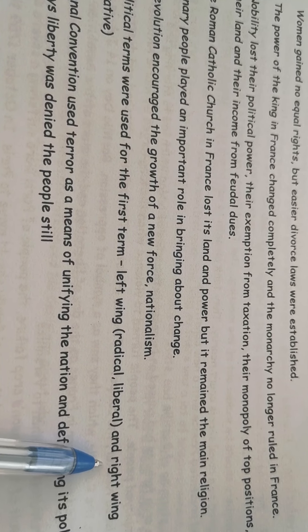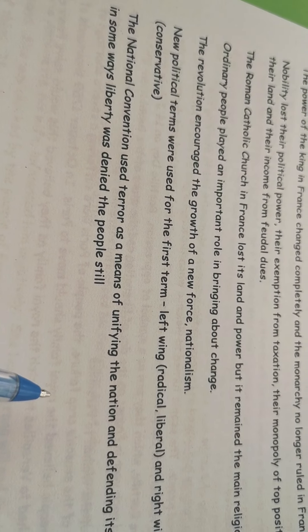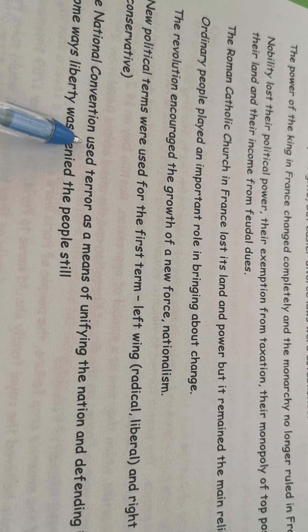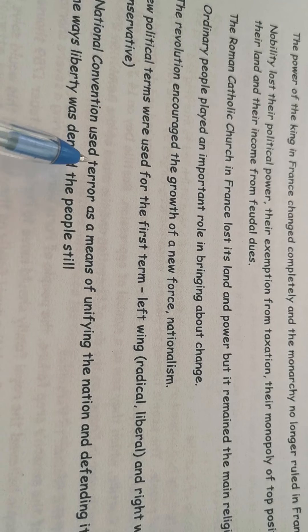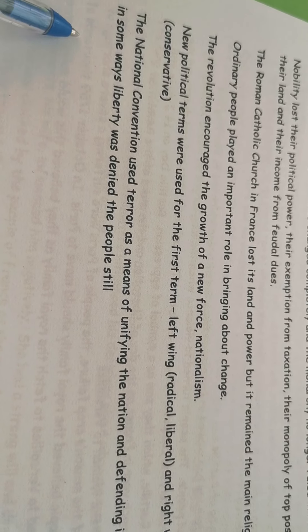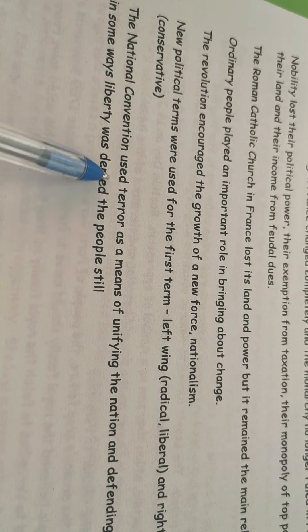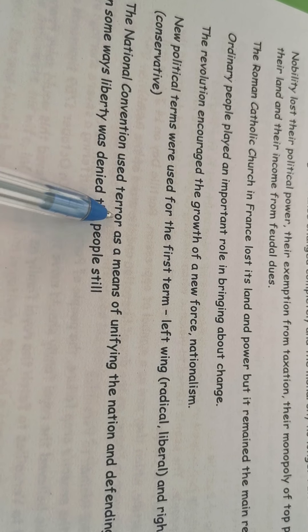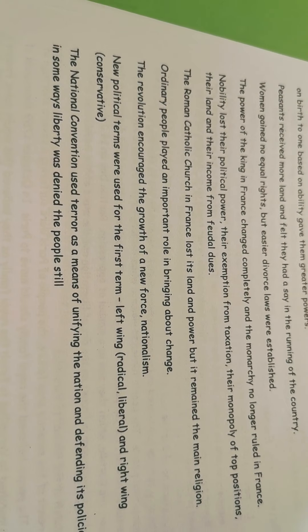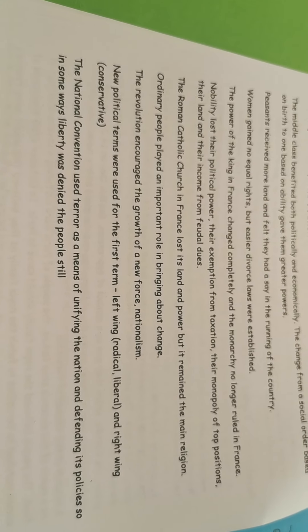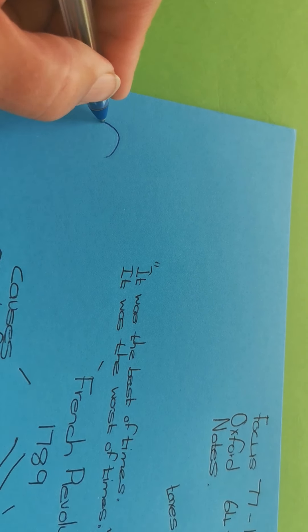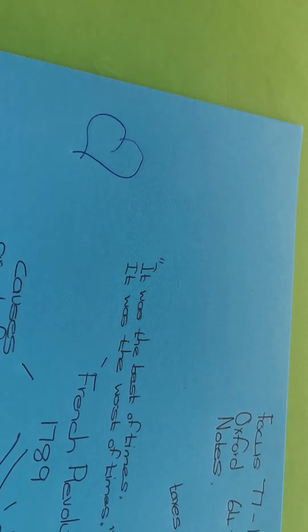Then we say that the National Convention—that's just a name for the people who took over after the monarchy—they used terror to unite the nation and to defend its policies. But still, because of that, liberty was still being denied the people while they used terror. But sometimes the end justifies the means, and so they had to use that method to bring about change completely. So that's the French Revolution. I hope that helps. Remember, you are awesome and you are loved.